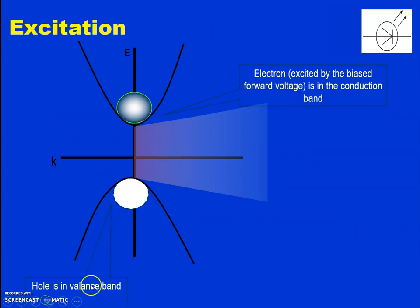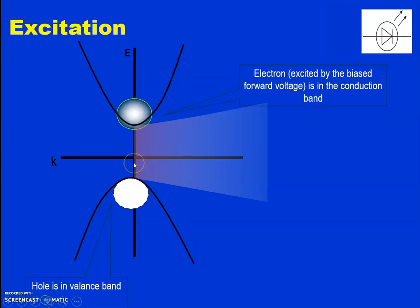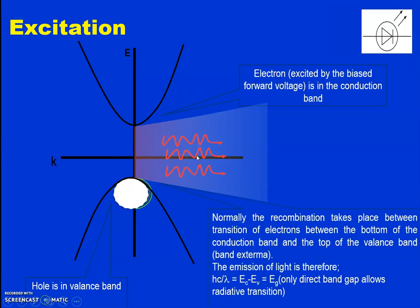Referring to the energy versus momentum figure: this is the minimum of the conduction band and this is the maximum of the valency band. When the electron and hole combine, the energy is released in the form of light. The emission of light depends upon the energy gap. The relationship is: E = hν, where ν = C/λ. Substituting, hC/λ = bandgap energy.